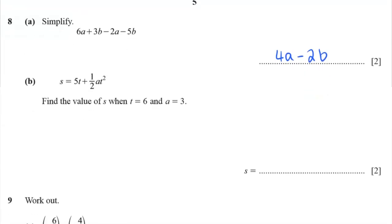For part B, we see s equals 5t plus 1 half a t squared. We're told that t equals something and a equals something. So where we see a t, we put 6. Where we see a, we put 3. S is 5 times 6, plus 1 half times 3. And t squared, well, t is 6. So t squared is 36. All right. 5 6s are 30. Half of 36 is 18. And 3 times 18 is 54. 54 plus 30 is 84. Let's log that in and get the marks.